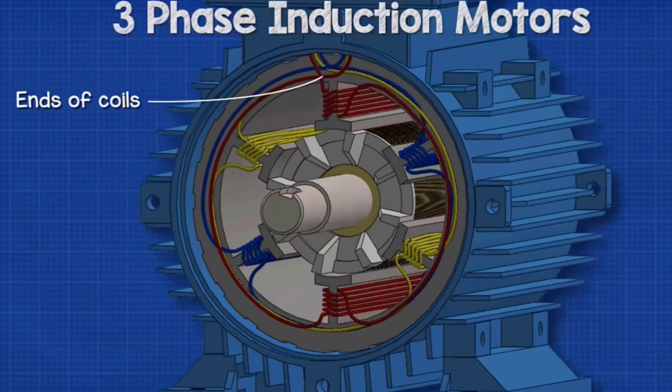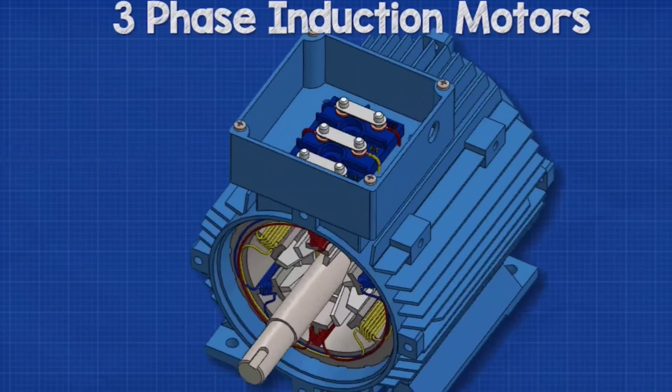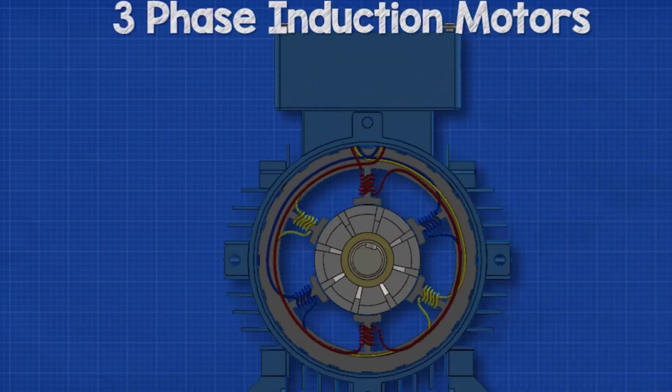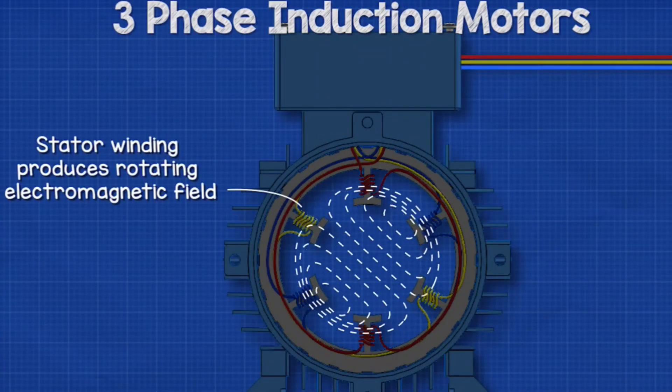Based on the type of rotor construction, induction motors are divided into two types: squirrel cage motor and slip ring motor. In an induction motor the stator winding is fed with an AC supply. This causes the stator winding to develop an alternating flux — we call this rotating flux the rotating magnetic field, or RMF.